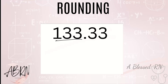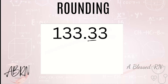One last example: 133.33. We'll round to the whole number — go one decimal place to the right, it's four or below, no-go. Now we'll round to the nearest tenth — it's four or below, no-go. So the answer is 133.3.